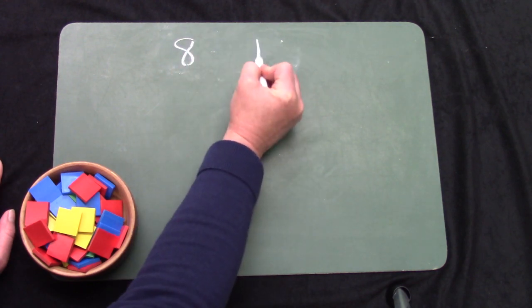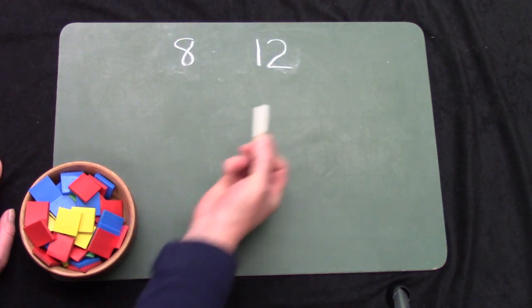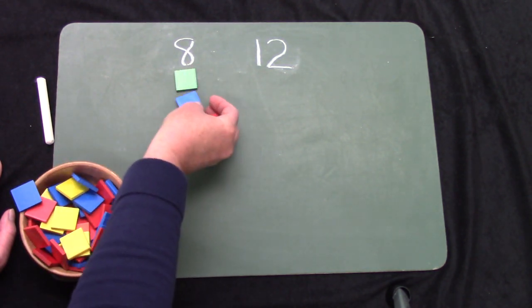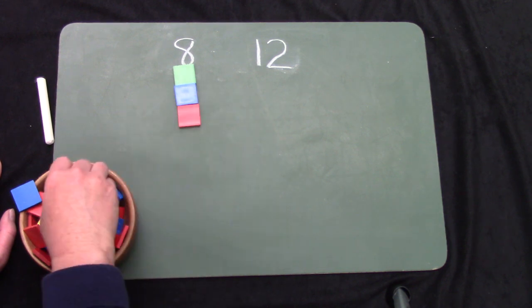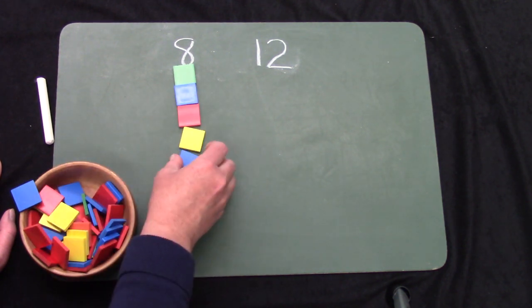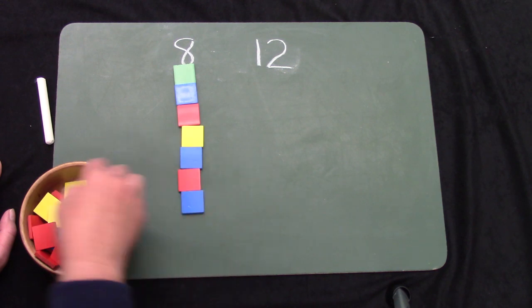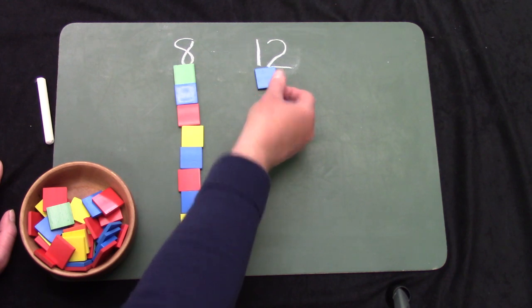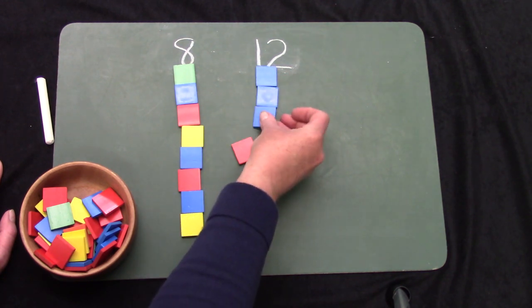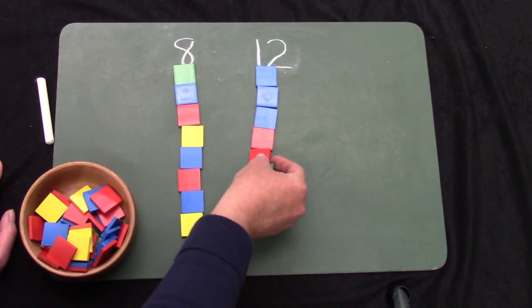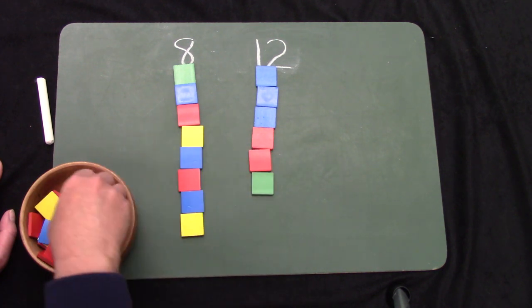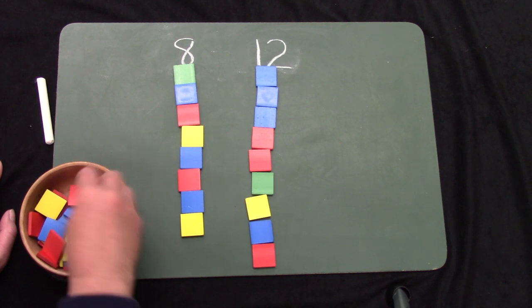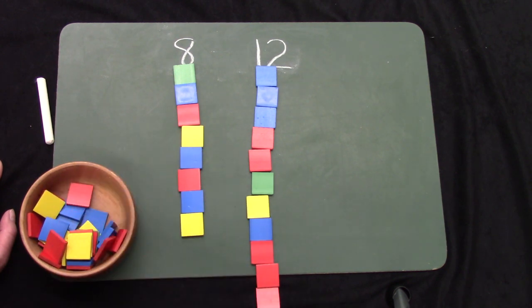Let's compare the numbers 8 and 12. 1, 2, 3, 4, 5, 6, 7, 8. And let's compare it to 12. 1, 2, 3, 4, 5, 6, 7, 8, 9. Oh dear! 10, 11, 12.